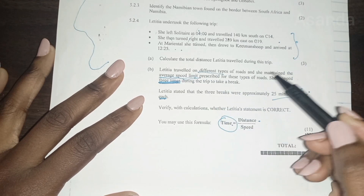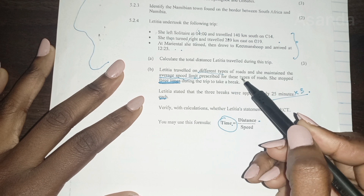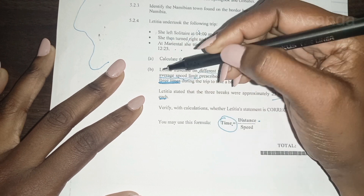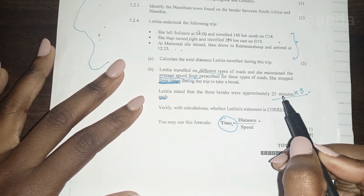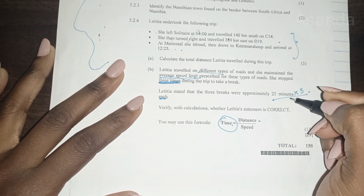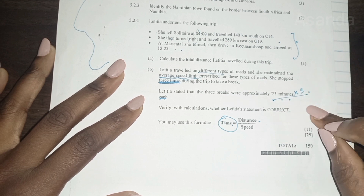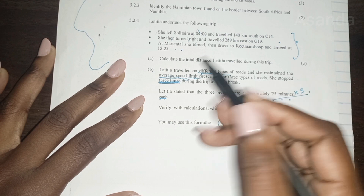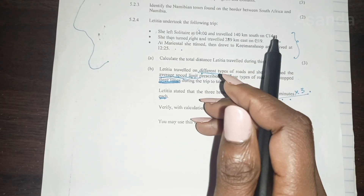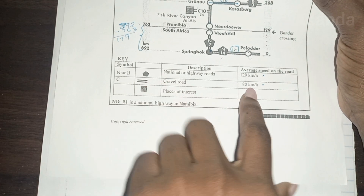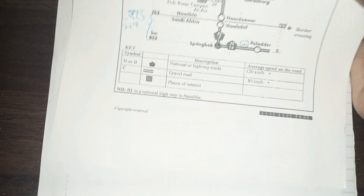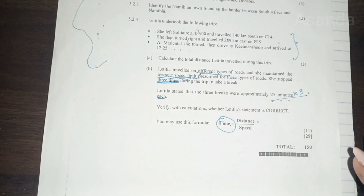Letitia traveled on different types of roads and maintained the average speed prescribed for each road type. She stopped three times during the trip, each break approximately 25 minutes. She's traveling on different roads, so the speed is different: on gravel the maximum is 80 kilometers per hour, and on highway the maximum is 120 kilometers per hour. She won't drive at the same speed, so she won't take the same time on different roads.